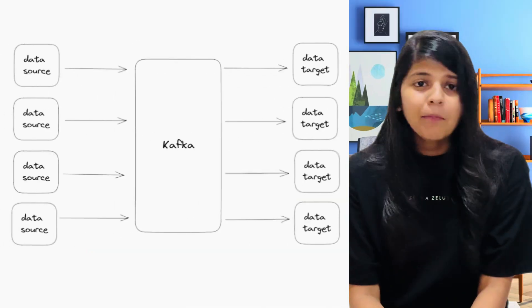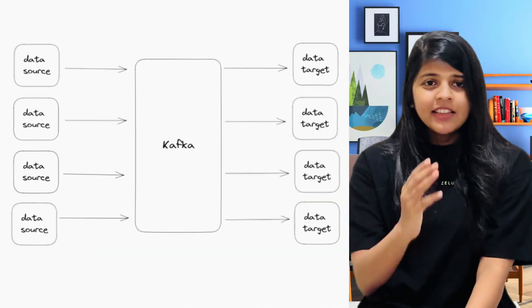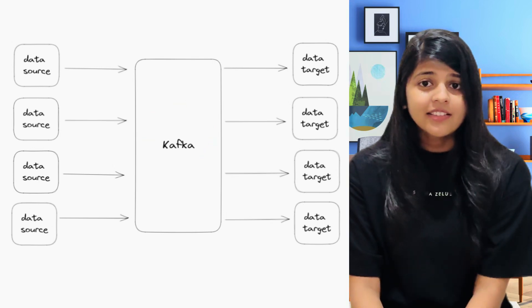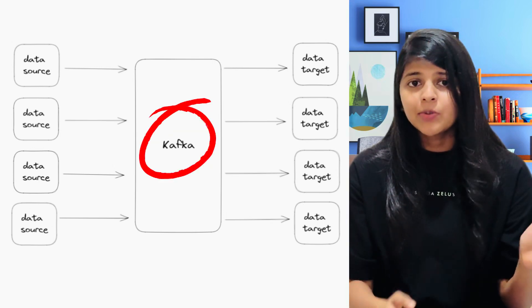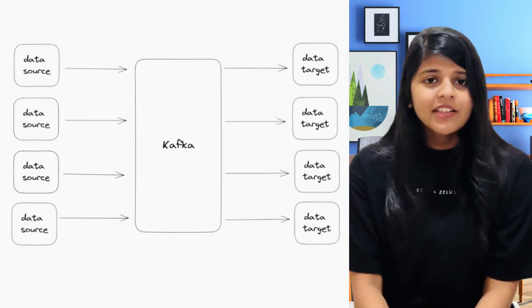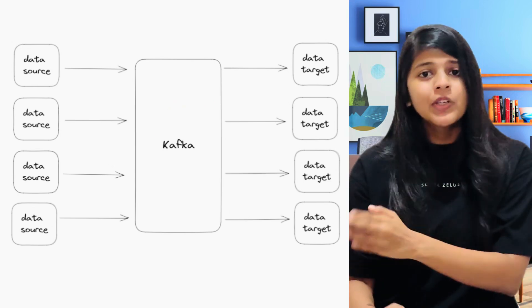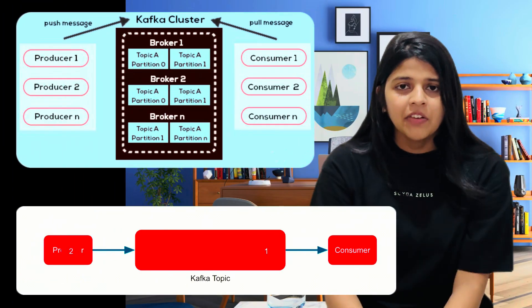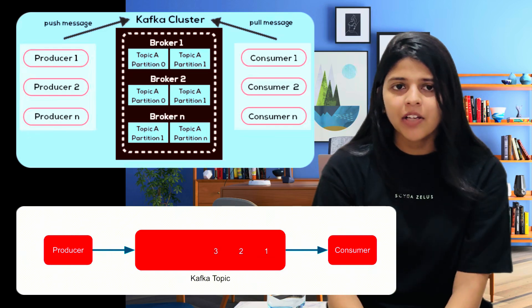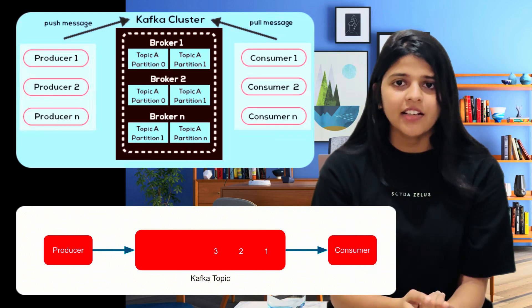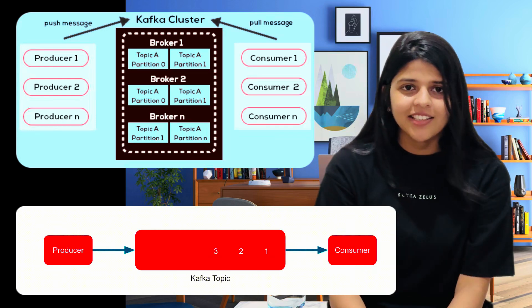Now let's introduce Apache Kafka in the picture. In this second picture, we have a Kafka broker acting as an intermediate layer between our data sources and targets. Instead of having direct connections between each source and target, all data flows through Kafka. In Kafka, we have data producers such as our sources — we can publish data to topics in Kafka from these data producers. And we have data consumers such as our targets that are used to consume the data.